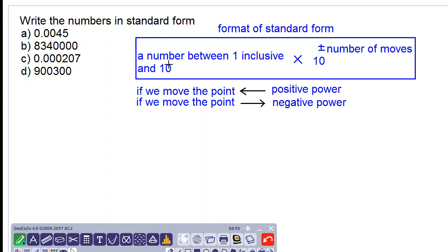The format of standard form: we want a number between 1 inclusive and 10. So the number can be 1, but it cannot be 10.